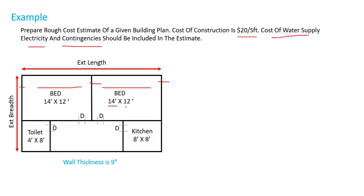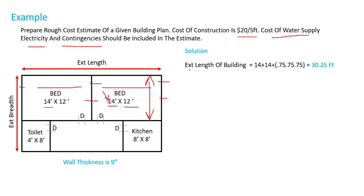We have two dimensions: 14 feet by 12 feet. The first is the horizontal dimension, called the length, and the second is the vertical dimension, called the breadth. The length is 14 feet, then again 14 feet. We also need to include the walls — the wall thickness is 9 inches, meaning 0.75 feet. So the external length equals 14 + 14 + 0.75 + 0.75 + 0.75, giving us a total external length of 30.25 feet.